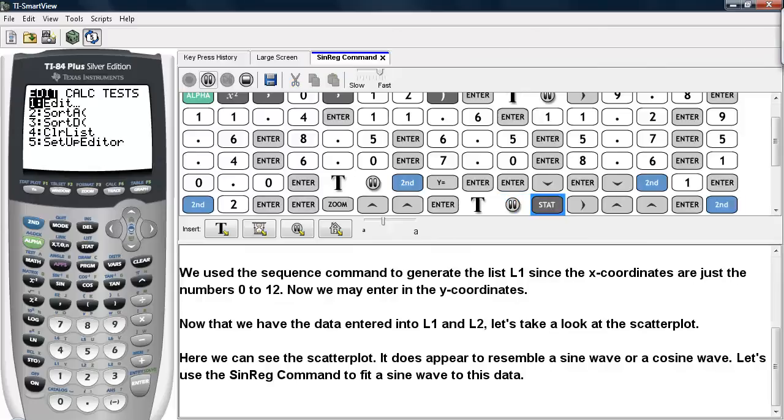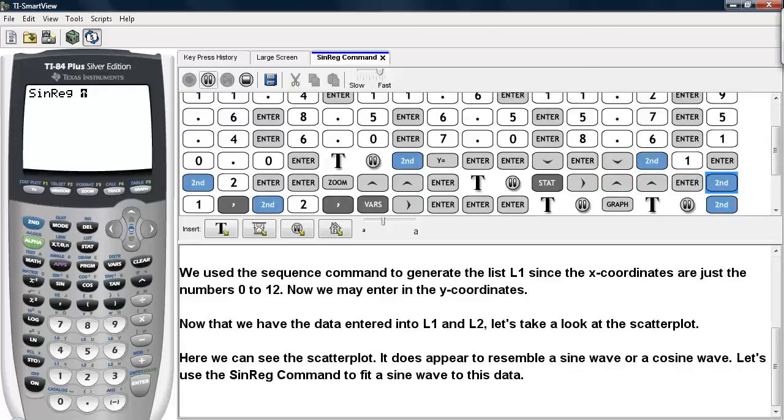So we'll hit stat, go over to calc, and scroll until we get to sinreg. It's usually toward the bottom. We'll tell it to use L1 for the x-coordinates, and then L2 for the y-coordinates. And we're going to tell it to store the results in the y1 slot. So we'll go under vars, y-vars function, and select y1.